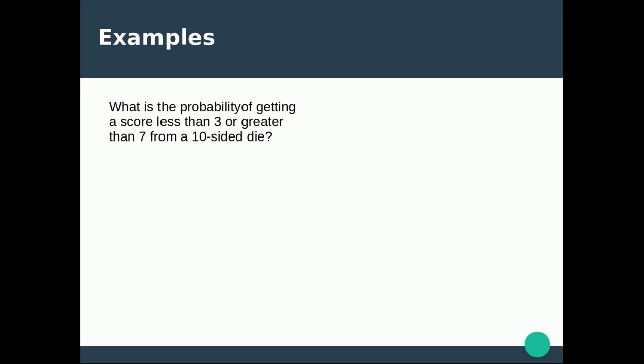The probability of getting a number less than 3 is 2 over 10, because only 1 and 2 satisfy that condition. The probability of greater than 7 is 3 over 10, because we can get an 8, 9, or 10.